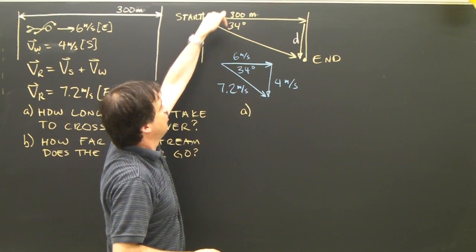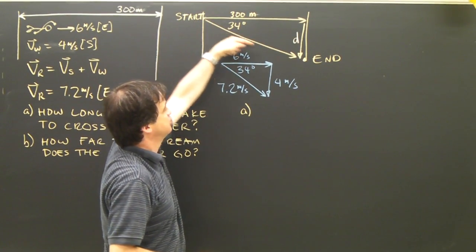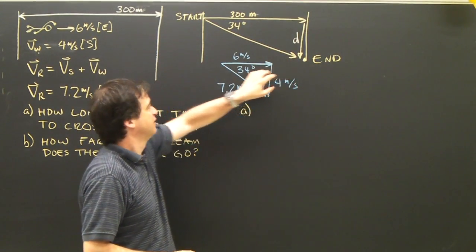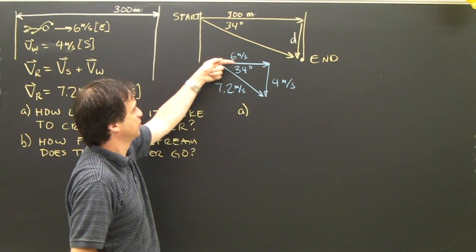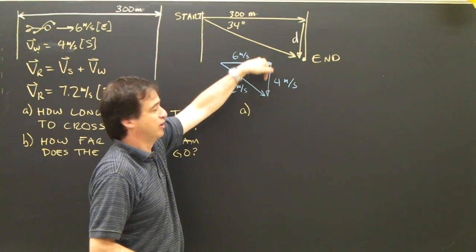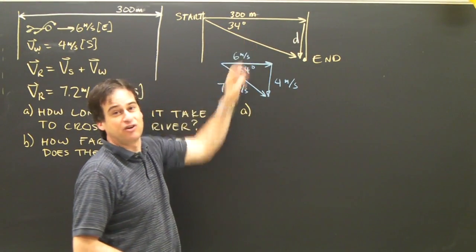The swimmer is going to go this way. The water is going to go that way. So this is the resultant path of the swimmer. And this triangle, which is the triangle showing the velocities, the swimmer swimming this way and the water swimming this way. This triangle and this triangle are related.